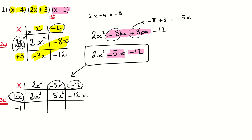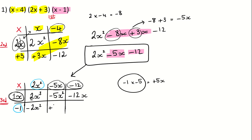And then I'm going to focus on the negative 1 — everything is going to be multiplied by the negative 1. 2x squared times negative 1: it's a negative times a positive, so it's negative 2x squared. Negative 5x times negative 1: negative 1 times negative 5 is a positive 5, and of course the x is added at the end, so this is plus 5x. And the last one: negative 12 times negative 1 is a positive 12.